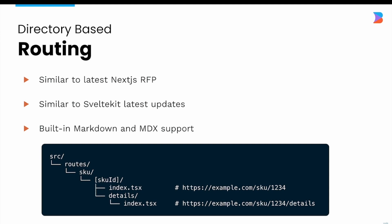Routing is probably one of the most important features. Quick City uses directory-based routing, which is similar to Next.js's recent proposal and Svelte Kit's latest updates. Within the source routes directory, to make a route the directory should have an index file, and the file hierarchy of directory names creates the URL path. Directory names can also be used to read params within segments of the URL path.